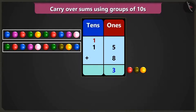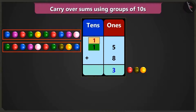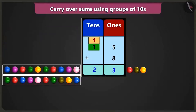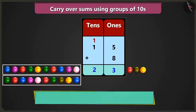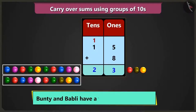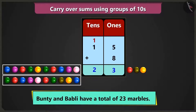So in the box of tens, when we add one ten and another one ten, we will get two tens, that is twenty. This means we now have two tens and three ones, that is twenty-three marbles.